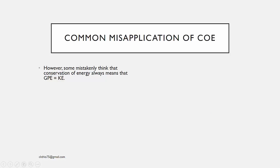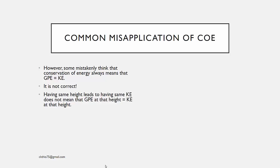However, there are some common misapplications of conservation of energy. A common misconception is that conservation of energy means gravitational potential energy always equals kinetic energy. Based on the previous example, having the same height leading to the same kinetic energy does not mean that GPE at that height equals KE at that height.